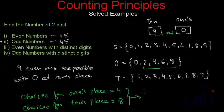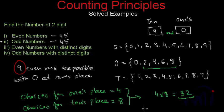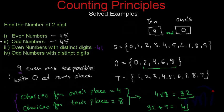The total number of two-digit even numbers with distinct digits will be four multiplied by eight, that is 32. So 32 even numbers are possible which don't have zero at the unit's place, and nine even numbers will have zero at the unit's place. That means total two-digit even numbers with distinct digits will be 32 plus 9, which is 41 — the same result we got earlier.